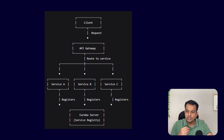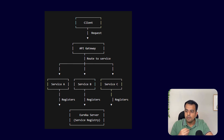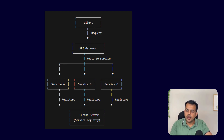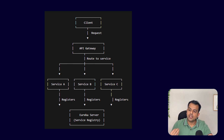Here is a simple diagram showing a client, an API gateway, and services A, B, and C, along with a Eureka discovery server. Whenever a client calls any service, the request goes through the API gateway to the Eureka server, which finds the suitable service to call.